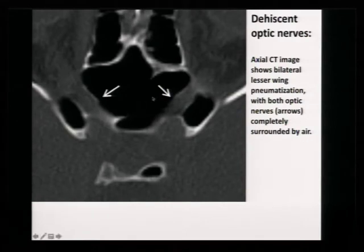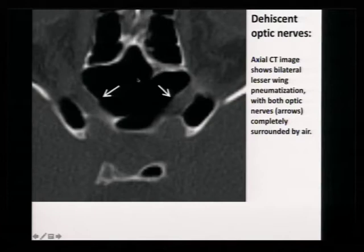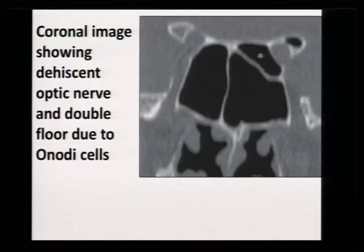The optic nerve on both sides may not have any bone over it — dehiscent optic nerve. You should never use monopolar cautery in the sphenoid sinus, as you can injure the optic nerve. Also, at times the septa is going and attaching to the optic nerve, which can create a problem.